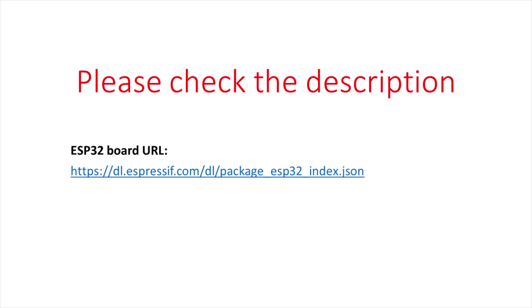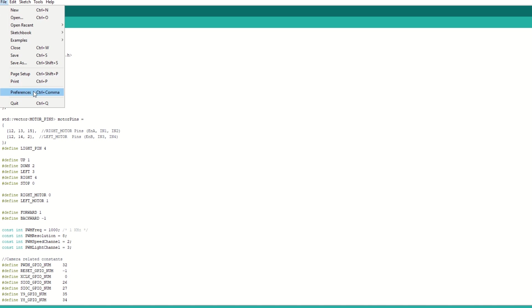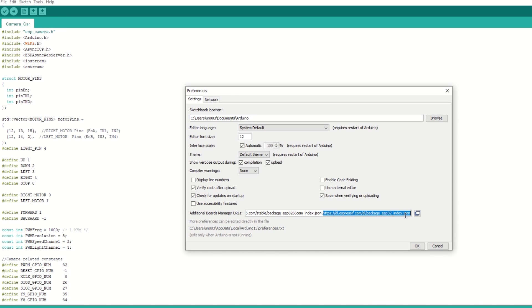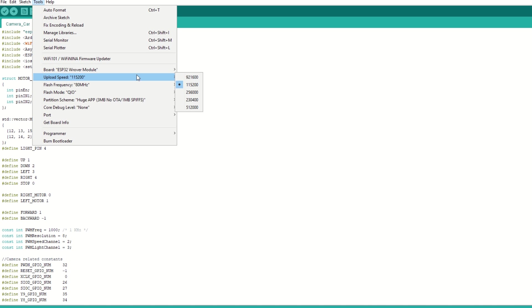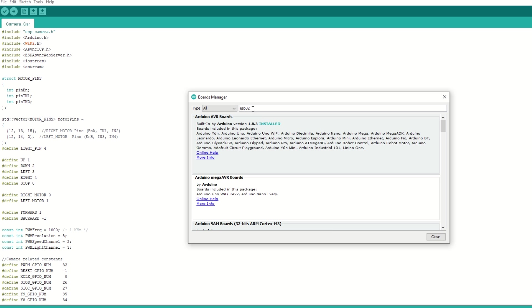Let's take a quick look at the code. First, we need to install ESP32 board using Arduino board manager. I have provided the ESP32 board link in the description below. Go to file, preferences and add the ESP32 board link. Then go to tools, then boards manager. And search for ESP32 and install it.